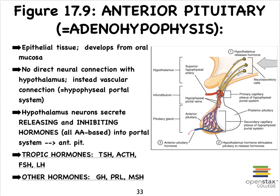Words that have the prefix adeno or adenoid in them typically refer to glandular. True glands are made up of epithelial tissue, so the adeno-hypophysis, or the anterior pituitary, is made up of epithelial cells. Many of these cells have different functions, because the anterior pituitary produces quite a few hormones — you can see some of them listed here. All of these different epithelial cells are producing these different hormones.